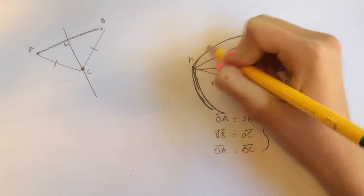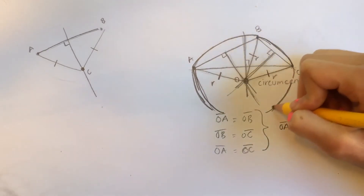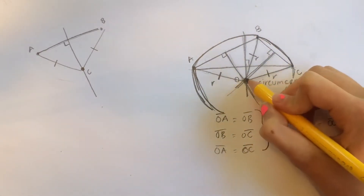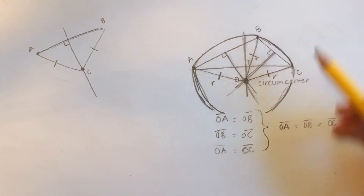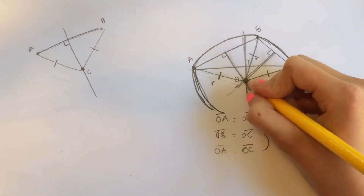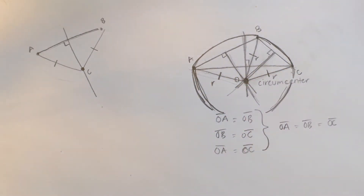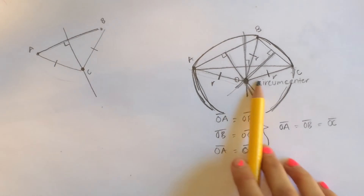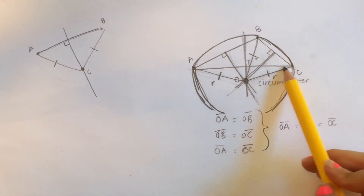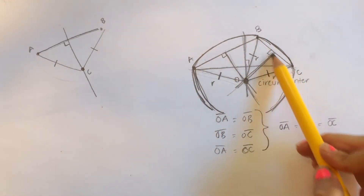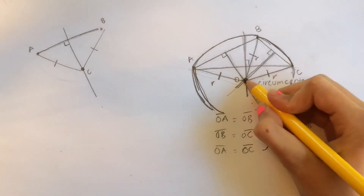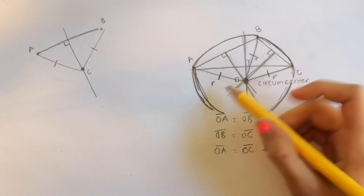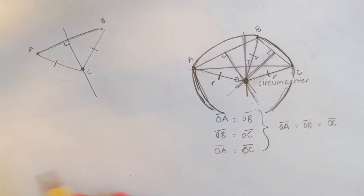So let's try to draw this circle — something like this. What is O? Well, since OA, OB, and OC are all radii, O is the center of the circle. This tells us that any triangle has its own circle that can be inscribed about it, and the circumcenter O is the center of the only circle that can be circumscribed about this triangle.